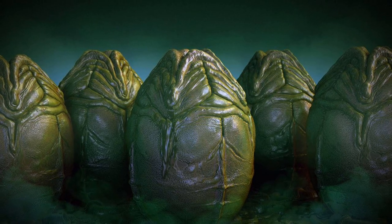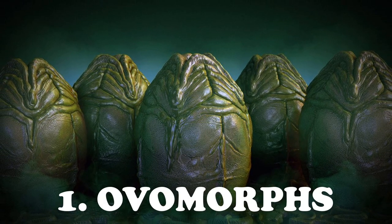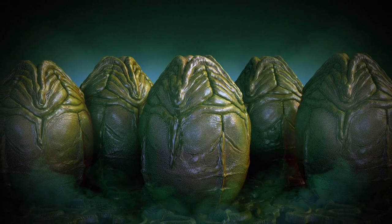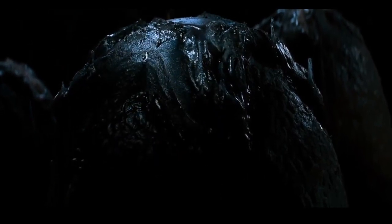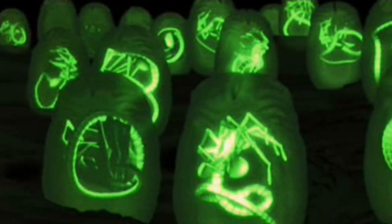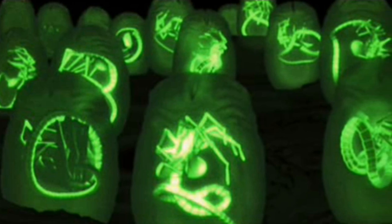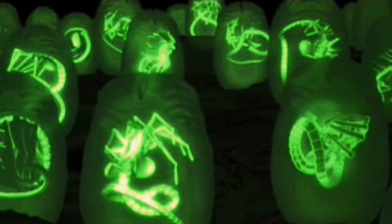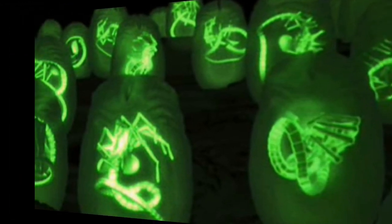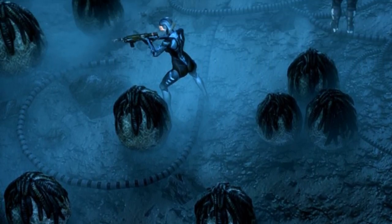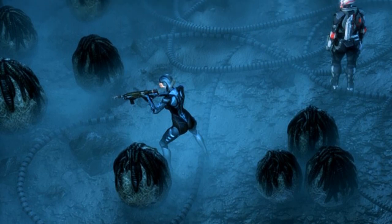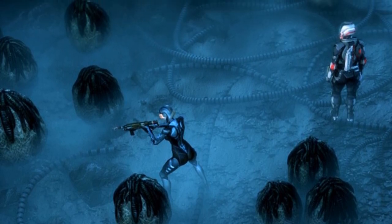Beginning with the first form of life in most instances, we have the Overmorph. Featured in most Alien movies and most commonly known as the Egg, the Overmorph is the first Alien life form encountered. It contains a fully grown facehugger and it detects movement, vibrations in the ground and even your scent to activate the facehugger inside. It is said that Alien eggs are produced by Alien queens but the actual origin during the first encounter is still unknown.